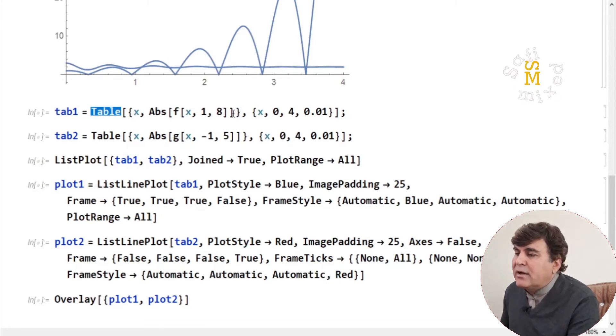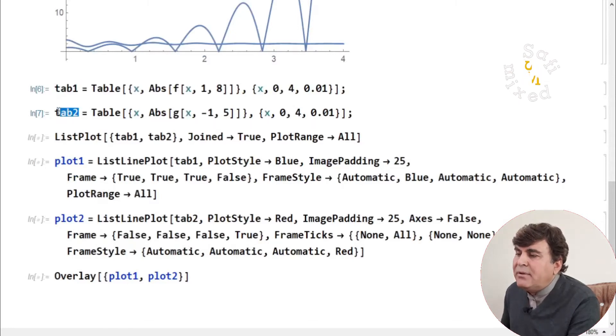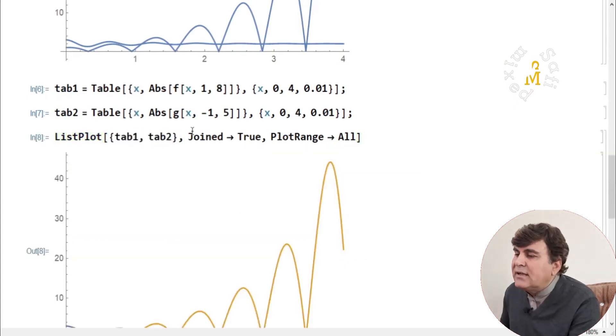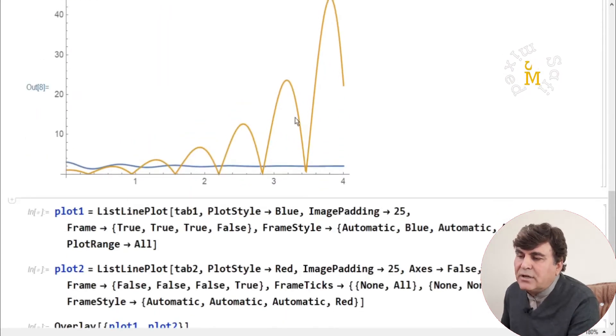If I develop this table for the absolute value of function F and table 2 for the absolute value of function G, then the data developed by the table command can be plotted by using the command ListPlot, and there I'm making the list of the two tables, which is table 1 and table 2.